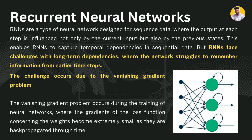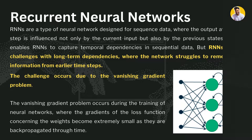Recurrent neural networks face challenges with long-term dependencies, where the network struggles to remember information from earlier time steps — it does not capture long-range dependencies. This is due to the vanishing gradient problem, which occurs during back propagation when the gradients of the loss function become so small that they do not contribute anything to the network.